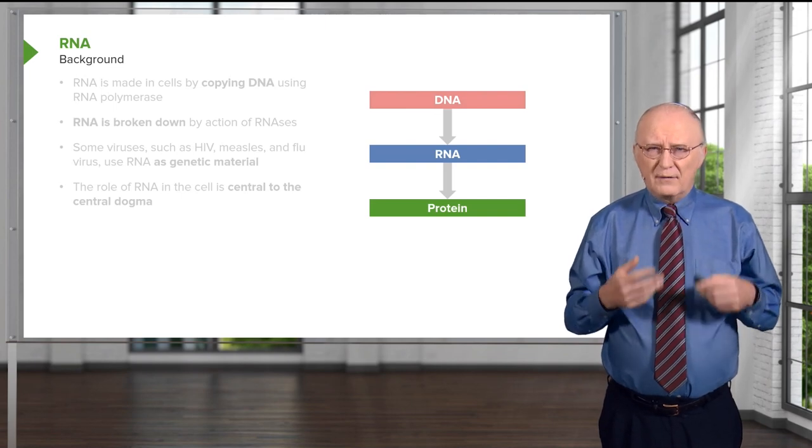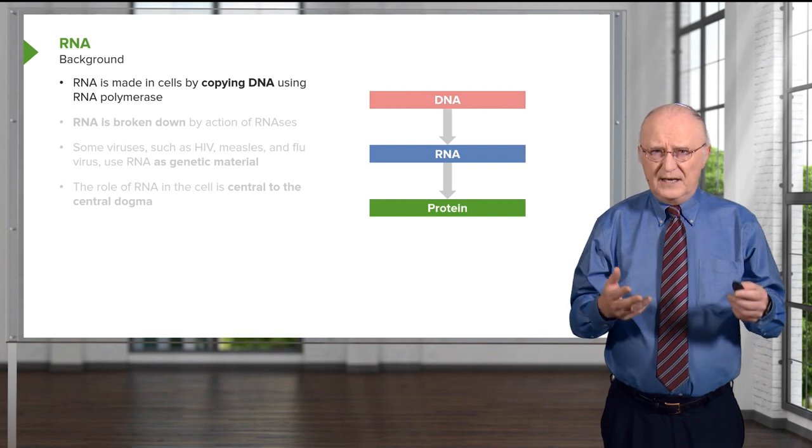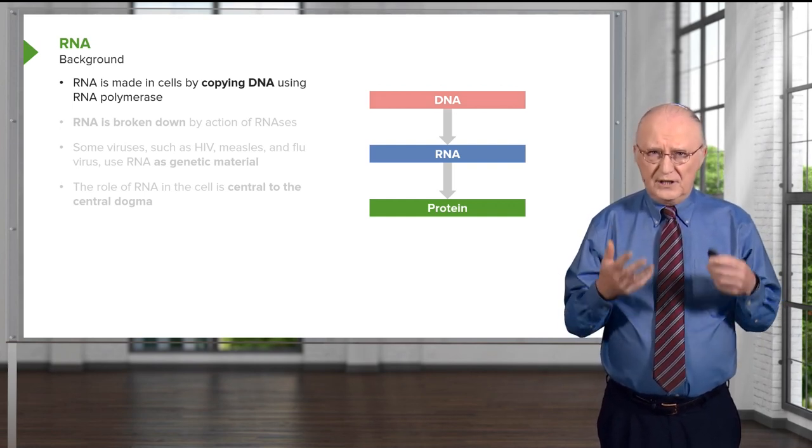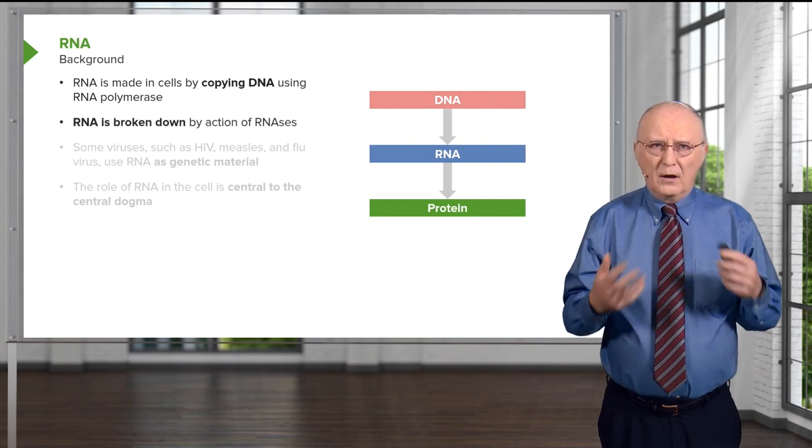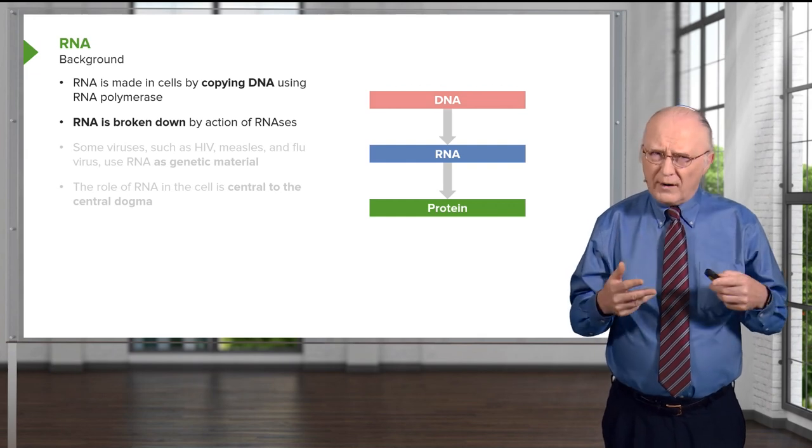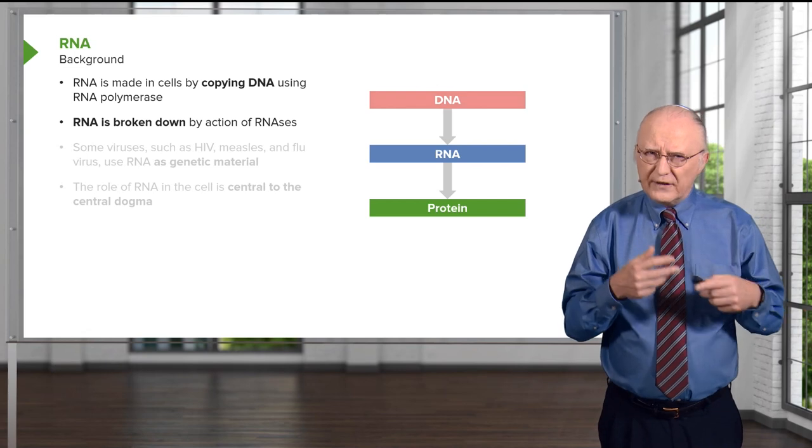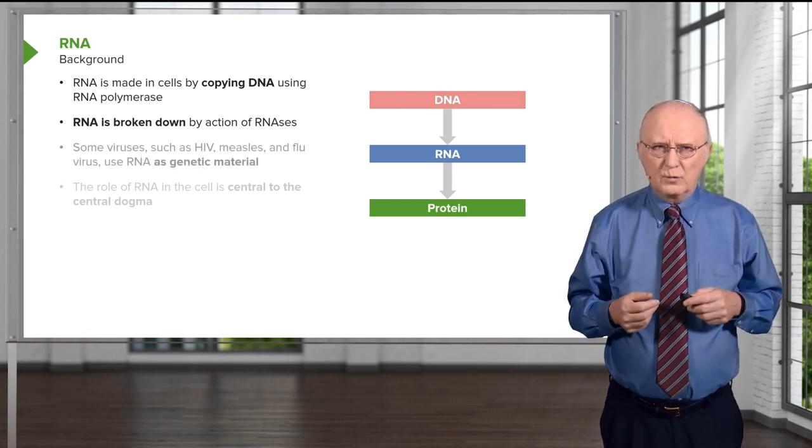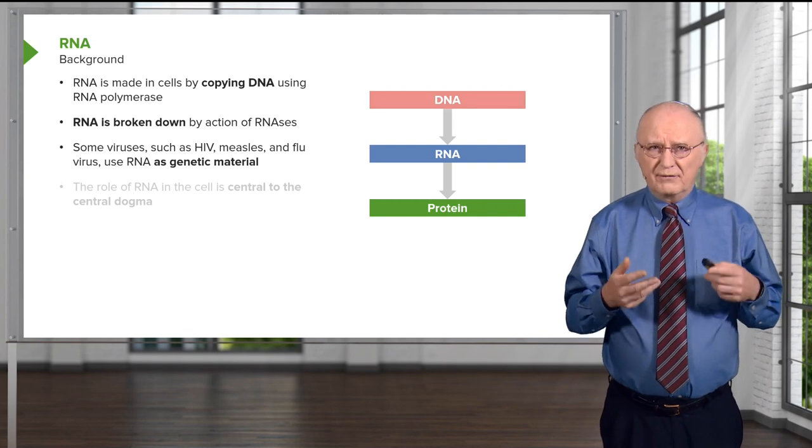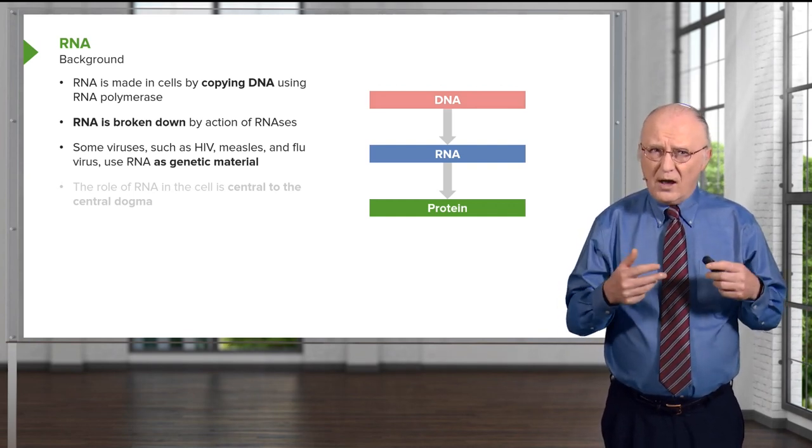RNA is made from DNA in the process of transcription, and the copy of DNA is made into RNA using the nucleotides U, G, C, and A. RNA is processed by various enzymes known as RNases, and RNA can also be completely broken down by various other RNases, so it's a relatively unstable molecule to work with. Some viruses, like HIV, measles, and flu virus, actually use RNA as their genetic material and not DNA.